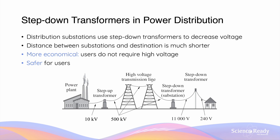After electricity is transmitted over long distances and finally reaches a substation that is much closer to the users of this energy, a step-down transformer is used to decrease the voltage. Since the distance between the substation and the final destination is much shorter compared to the transmission stage, we no longer require high voltage, as the resistance of the wires is much smaller. At the substation, decreasing the voltage is also more economical, as end users such as our households do not require the high voltage used for transmission. Right before the electrical energy is delivered to our households, another step-down transformer is usually used to further decrease the voltage to a safe value — in Australia, this is usually 240 volts.